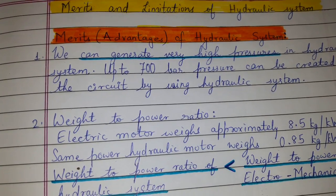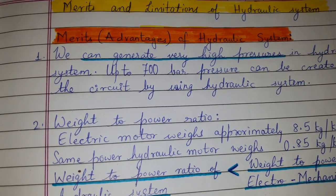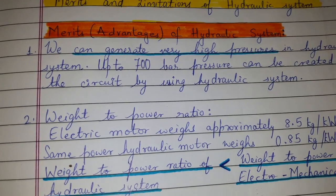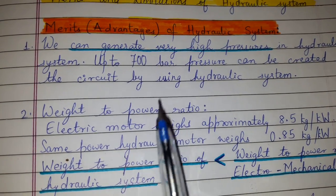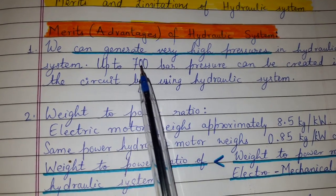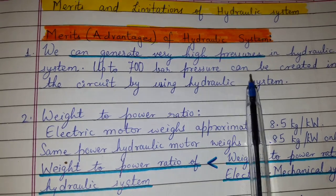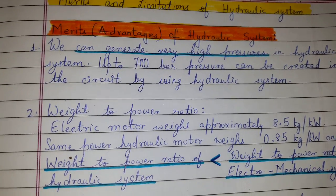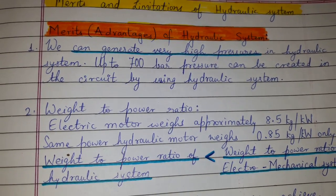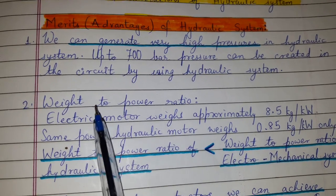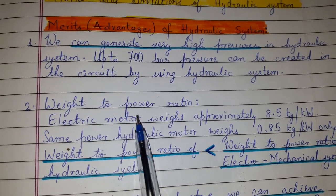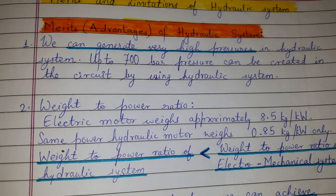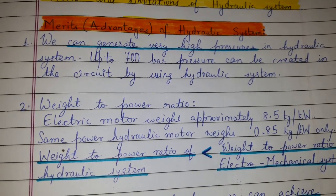We can generate very high pressure in a hydraulic system — up to 700 bar pressure can be created in the circuit. Regarding weight-to-power ratio, an electric motor weighs approximately 8.5 kg per kilowatt.